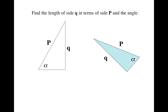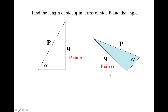Now what we're trying to do is find how long this side Q is in terms of the other known things. Notice it's opposite the known angle, so it's going to be P sine alpha. Let's play around with the next one — we're supposed to figure out how long Q is in terms of P and alpha. Again, Q is opposite the known angle, so this is going to be P sine alpha again.